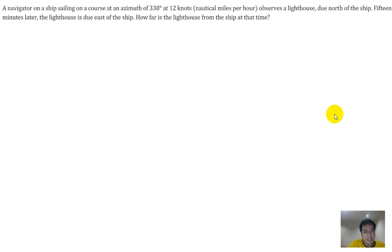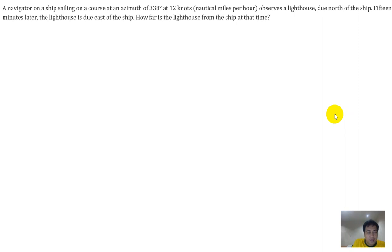There are only two main characters in this problem: the lighthouse and the ship. There are two points in time. The first one is when the ship is sailing and the lighthouse is due north — meaning the lighthouse is here, due north.